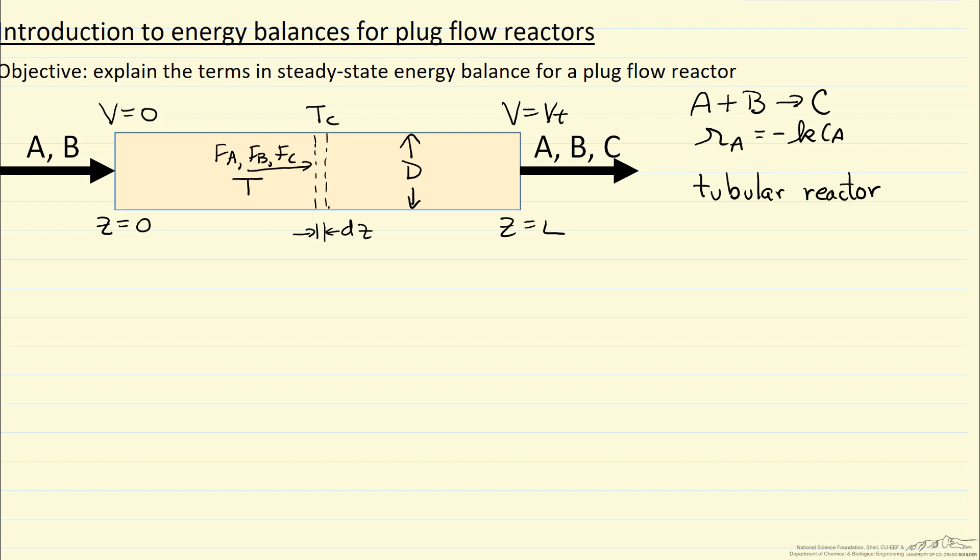So a couple of things. These flow rates are moles per time, for example, moles per hour. So if I now write the energy balance, I'm going to sum the molar flow rates times molar heat capacity, and then dT is the differential change in temperature in this differential volume we're looking at. Temperature changes because we have reaction.